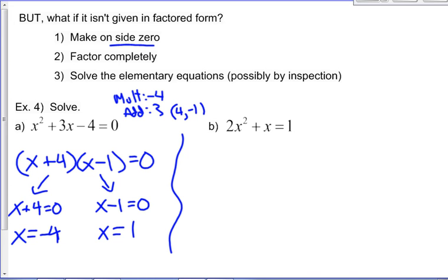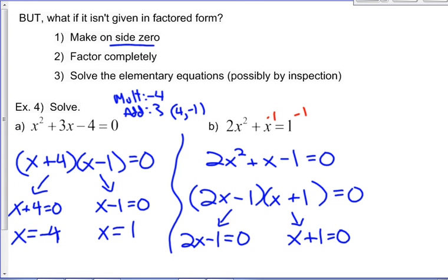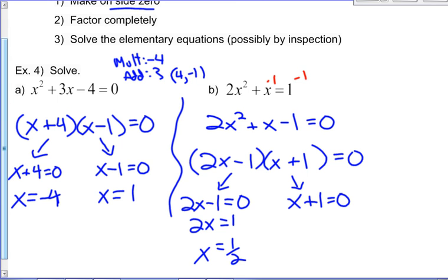For example B, one side isn't zero, so the first step is to subtract 1 from each side, giving 2x squared plus x minus 1 equals zero. Factoring this — you may need decomposition or inspection — gives (2x minus 1)(x plus 1) equals zero. The elementary equations are 2x minus 1 equals zero giving x equals one half, and x plus 1 equals zero giving x equals negative 1. Those are the two solutions.